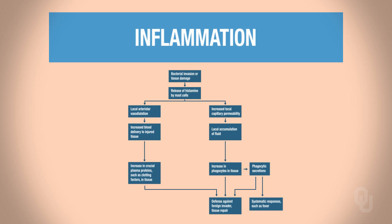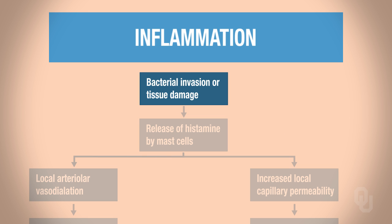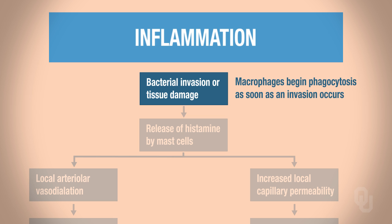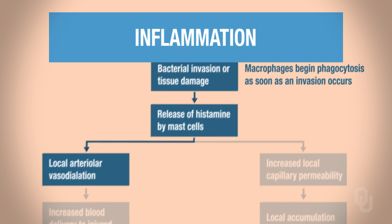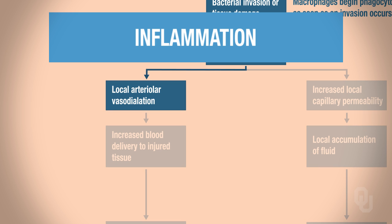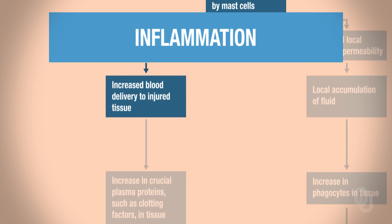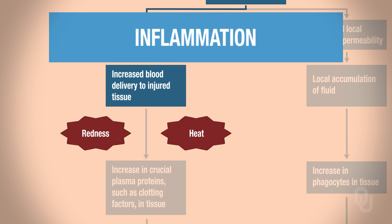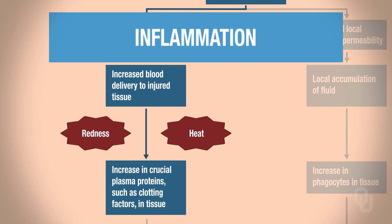Looking at the inflammation flowchart: macrophages are the leukocytes that immediately start phagocytosing as soon as invaders enter a wound. Bacterial invasion and tissue damage cause mast cells to release histamine, which causes vasodilation. When an artery vasodilates, there's less resistance and more blood flow to the injured area — that's why it becomes red and hot. More blood also means an increase in plasma proteins like clotting factors, which prevent bleeding out.